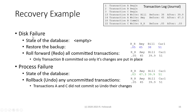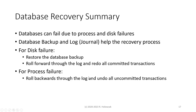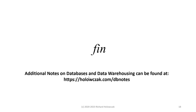You may notice that whether we have a disk failure and restore from backup, or a process failure and roll back, we end up in the same database state: raise rate 0.05, Amy 45, Bill 39.9, and Carl 51. To summarize: databases can fail due to process or disk failures. The database backup and log — sometimes called a journal — help the database uphold the durability property. For disk failure, we restore the database backup and roll forward through the log to redo all committed transactions. For process failure, we roll backwards through the log and undo all uncommitted transactions. That's all the material for database recovery — additional notes can be found at the professor's website.